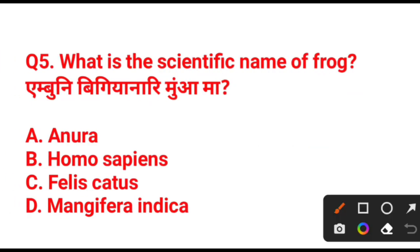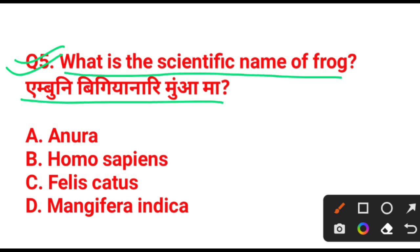Question number 5: what is the scientific name of a frog? The options are Anuran, Homo sapiens, Phallus, Catars, and Mangifera indica. The answer is Anuran — Anuran is the scientific name of frog.